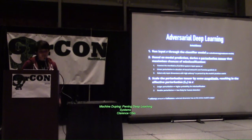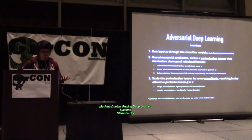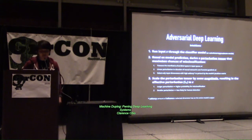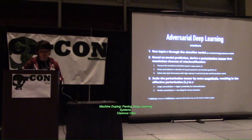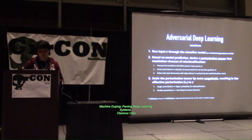Adversarial deep learning is mainly three steps. First, run input X through the classifier model. Second, based on the model prediction, derive a perturbation tensor that maximizes the chances of misclassification — there are three ways of doing this. Third, scale this perturbation tensor by some arbitrary magnitude. The smaller the magnitude, the less detectable it is to a human, but the lower the chance of tricking the model. The larger you scale it, a human may detect it, but it will trick the model more reliably.